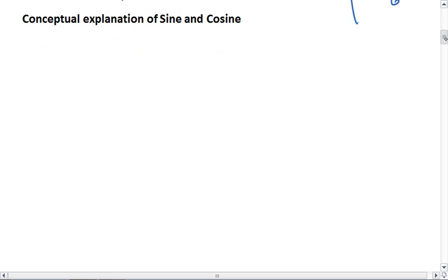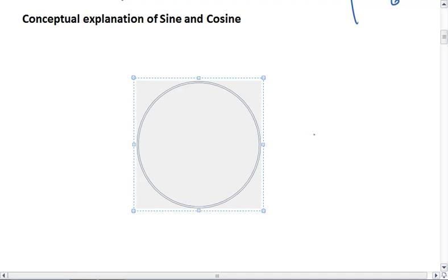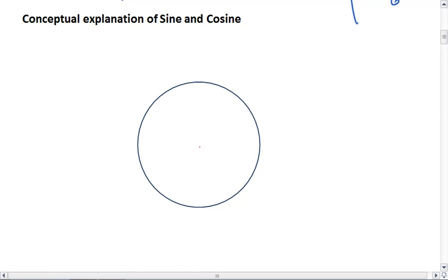This leads to what we're going to talk about with our conceptual understanding of sine and cosine. Let's first look at a circle. We already know our circle has a center and it's going to have some kind of radius. And every point on the circle is going to be the same distance away from the center, a radius length away.